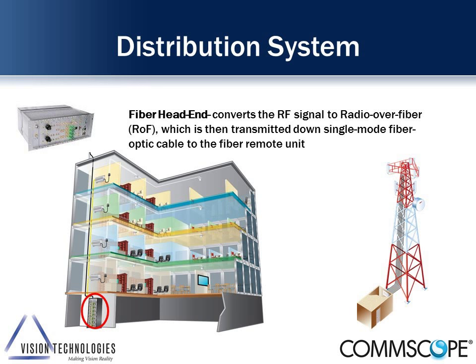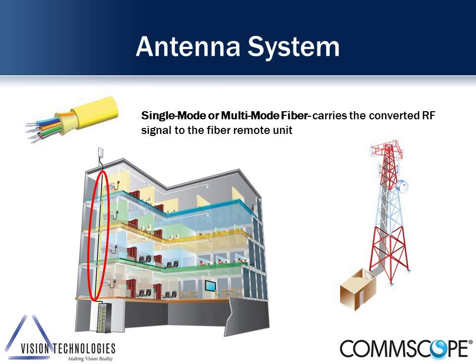The fiber head end is where we bring in all the signals — whether from a base station or an off-air repeater. We bring everything into a common infrastructure and convert everything from RF into light. From there, we combine all those signals and send them down either single or multi-mode fiber out to a remote unit.